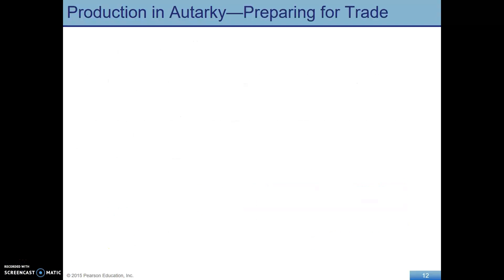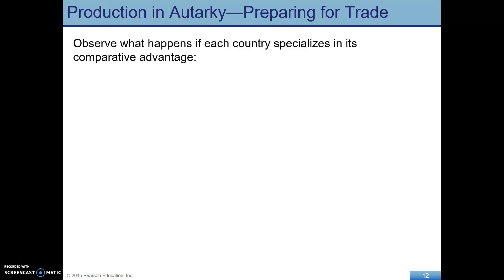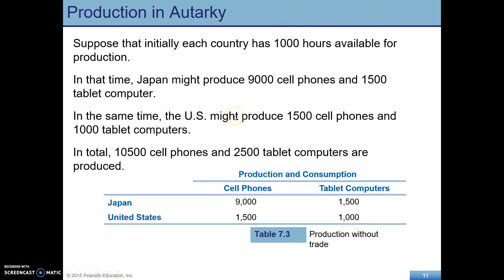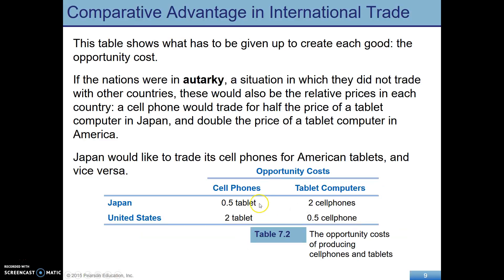Moving from no trade to trade, each country specializes based on its comparative advantage — whatever it can produce at the lowest opportunity cost. Japan specializes in cell phones because it only has to give up half a tablet per cell phone, and the U.S. specializes in tablets because it only has to give up half a cell phone per tablet. Those are the lowest costs for each respective country.